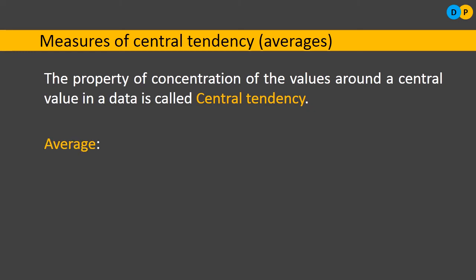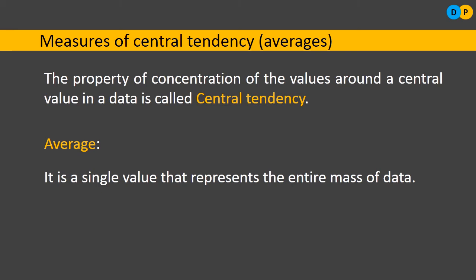Central tendency is also simply referred to as average. Average is a single value that represents the entire mass of data. For example, in a class of 50 students, each scoring different marks, the class average might come to 73 percent. Some scored above 73 percent, some below, but the grouping happens towards that particular value. That is average — a single value representing the entire mass of data.